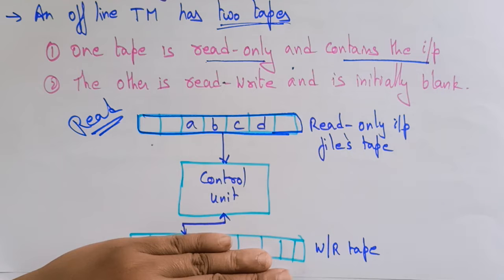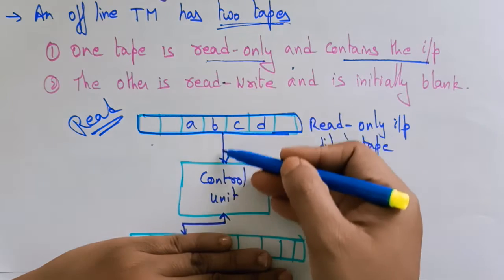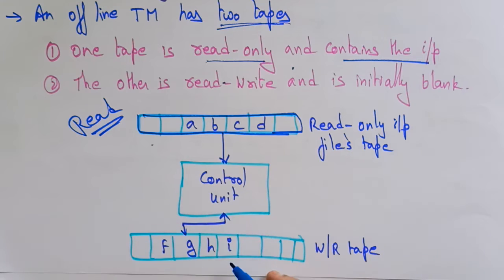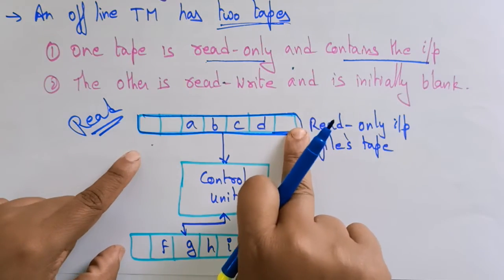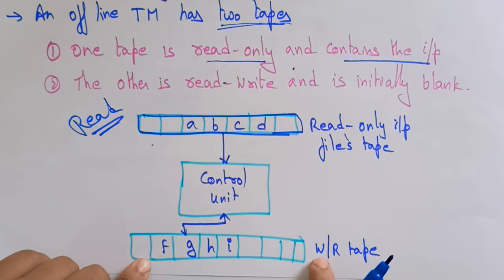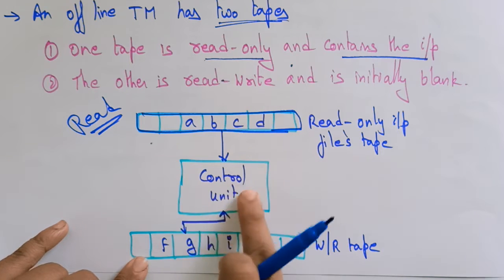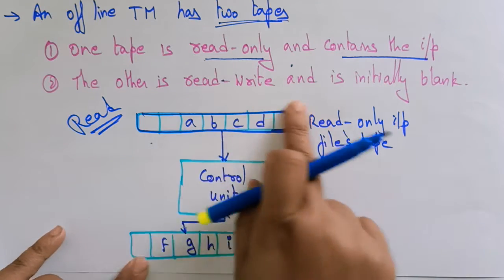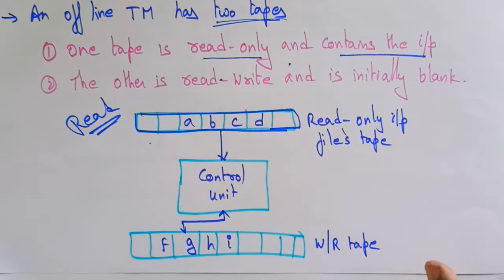So whenever you try to read the input symbols, you read from the read-only tape and place the data on the control unit. From the control unit you are reading or writing in the other tape. So the offline Turing machine consists of two tapes: one is used as a read-only input file tape, whereas the other tape is used as a read-write tape. For example, A, B, C, D are read from the input tape, and the control unit replaces A, B, C, D with F, G, H, I in the read-write tape. No modifications are done on the input tape — it only contains the input. The modifications and output are written in the read-write tape.